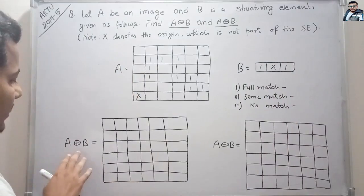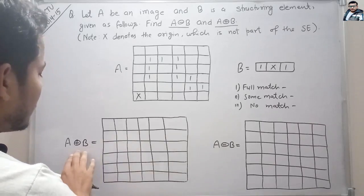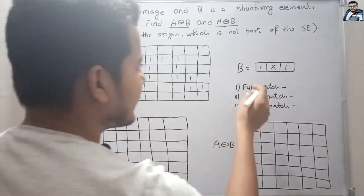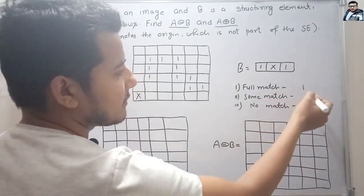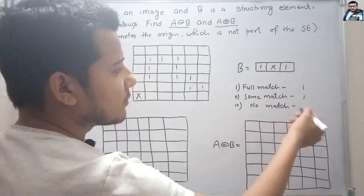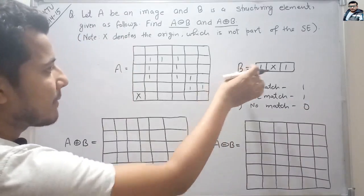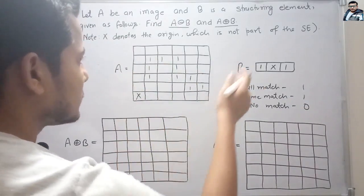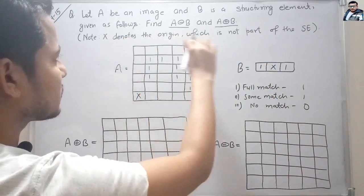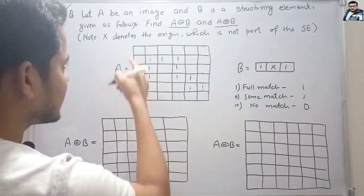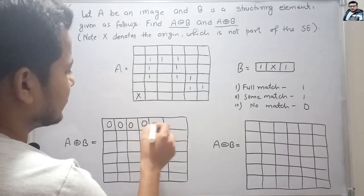So let's find the dilation and erosion. For dilation: when there is a full match we will write 1, when there is some match we will write 1, and when there is no match we write 0. So let's start with mapping of B on A. When we place B on the first row, then all will be 0 because all are blank — there is no matching, so all are 0.